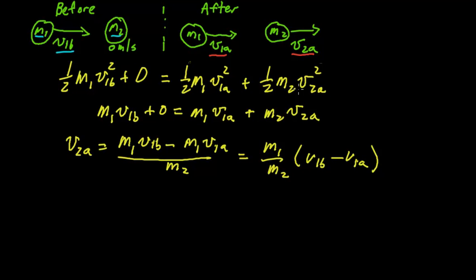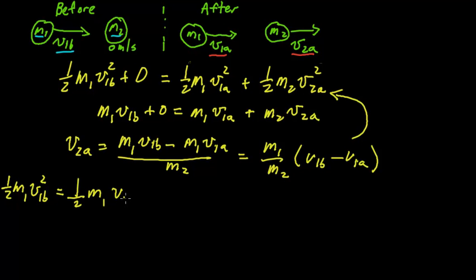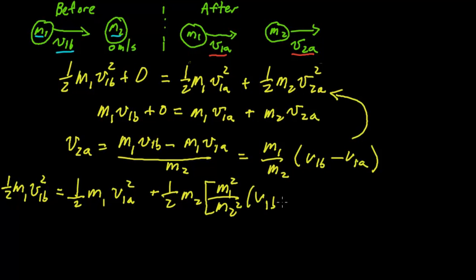Now I take this and plug it into the kinetic energy equation. One-half M1V1_before squared equals one-half M1V1_afterward squared plus one-half M2 times (M1 over M2)^2 times (V1_before minus V1_afterward) squared. The one-halves all cancel, and I can cancel M1 terms and an M2, simplifying the expression.